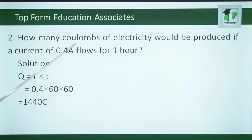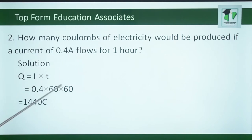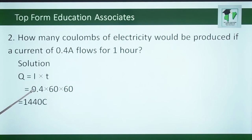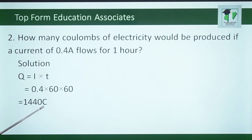Number 2. How many coulombs of electricity will be produced if a current of 0.5 amperes flows for 1 hour? We know that Q equals IT. Therefore, the quantity of electricity will be equal to 0.5 times 60 times 60, to give us 1,440 coulombs.